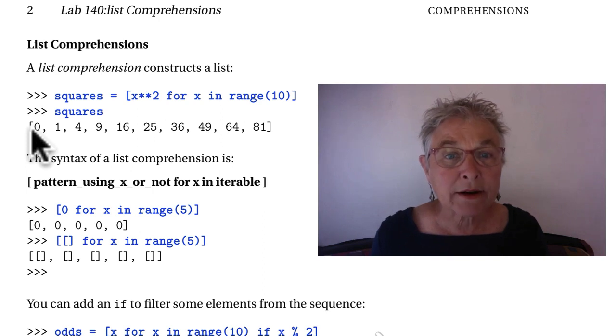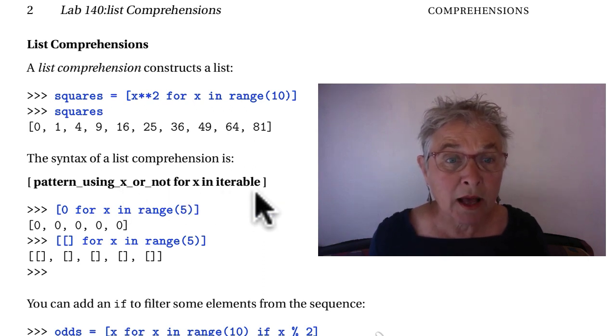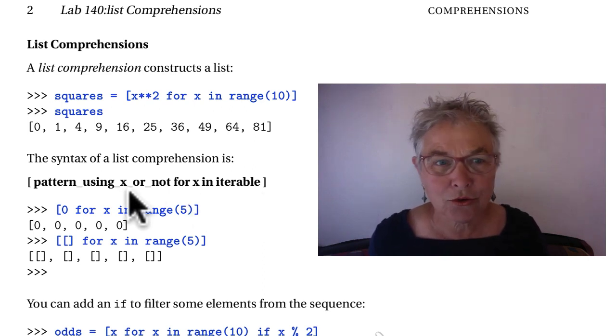So we have a pattern for that X in the iterable. You may not use the X in your list comprehension. Here we have five zeros. The pattern is zero and we have five empty lists.